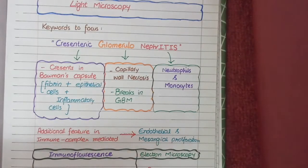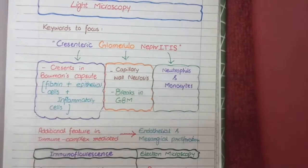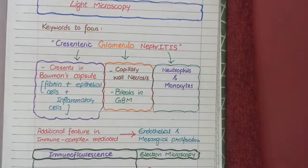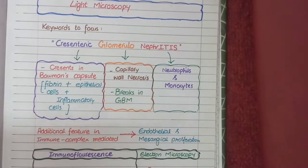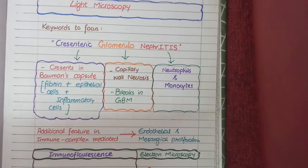Robbin's Pathology calls this type of proliferation extra-capillary proliferation. It is termed extra-capillary because the epithelial cells and inflammatory cells are outside the glomeruli in the Bowman's space — that is, they are proliferating outside the capillary loops.